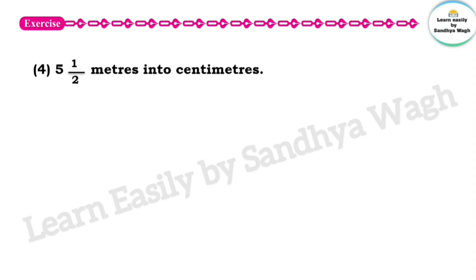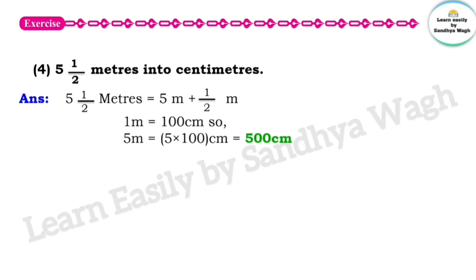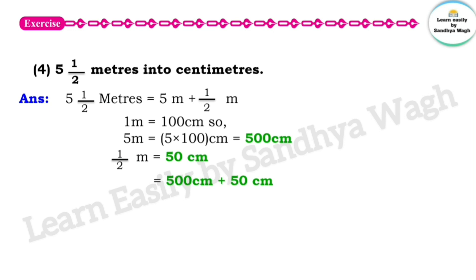Now the next question: convert 5 and a half meters into centimeters. 5 and a half meters means 5 meters plus half a meter. 1 meter is equal to 100 centimeters, so 5 meters is equal to 500 centimeters. Half a meter is equal to 50 centimeters. So 500 centimeters plus 50 centimeters is equal to 550 centimeters.